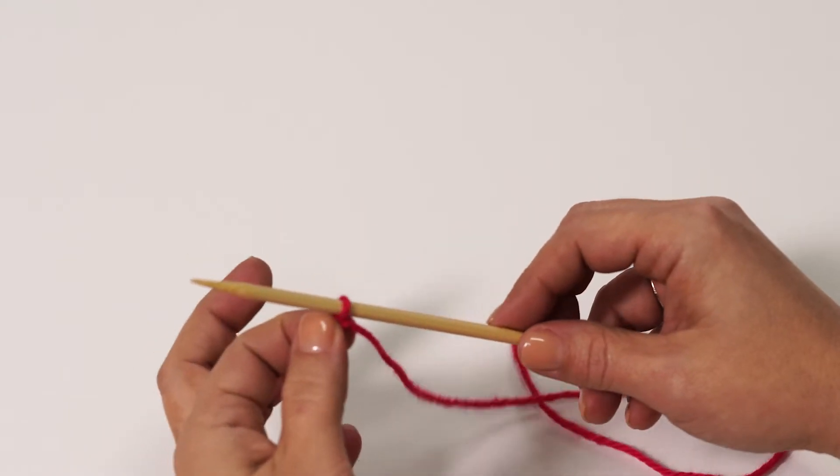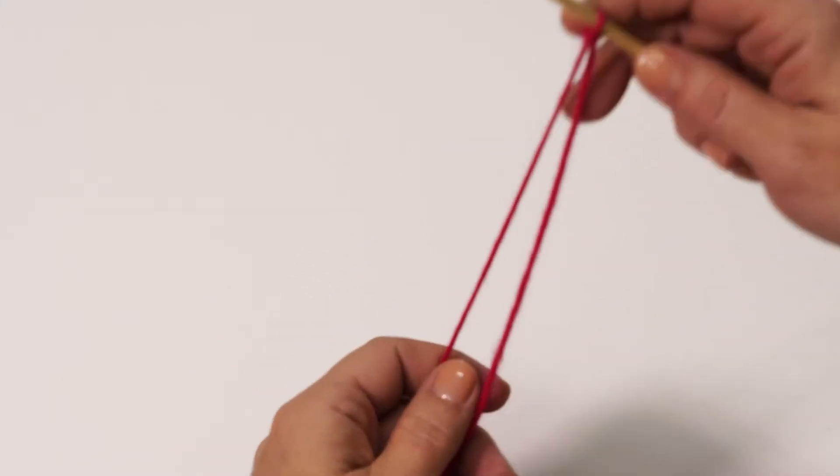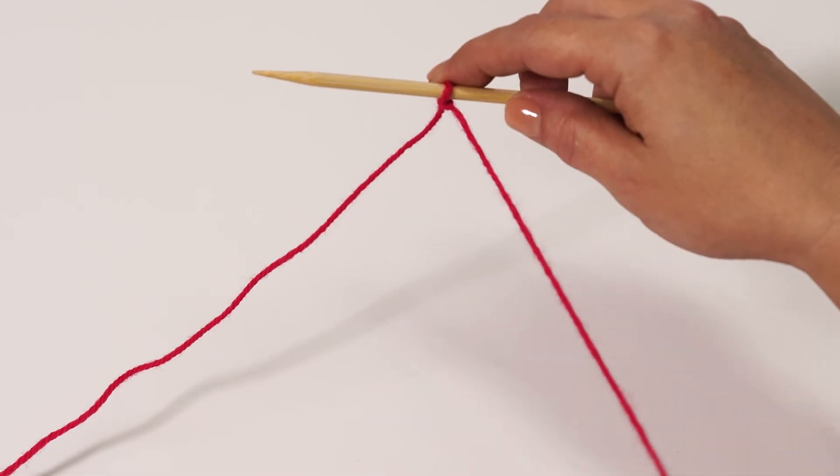You want it to be comfortably loose. The slipknot counts as the first stitch. Now let's cast on some more.